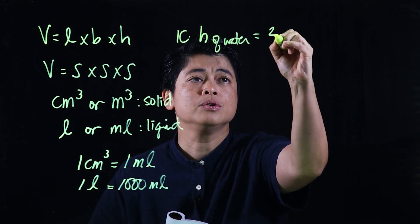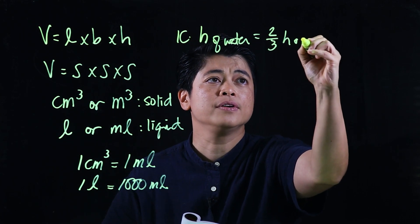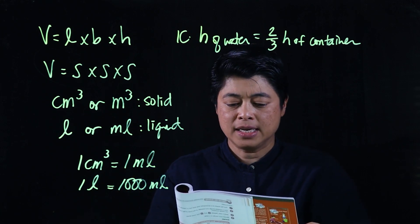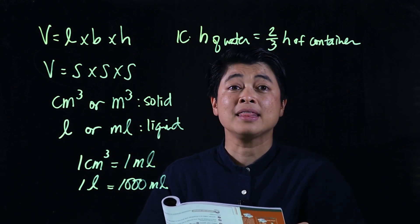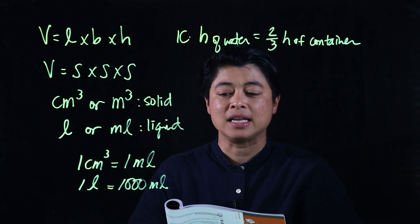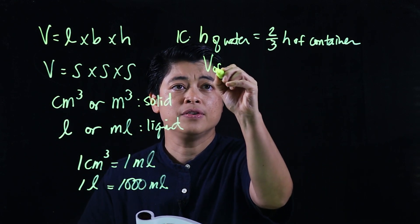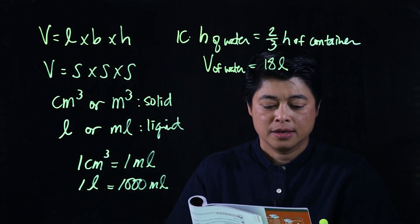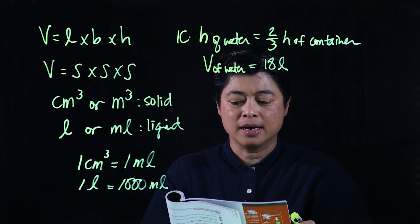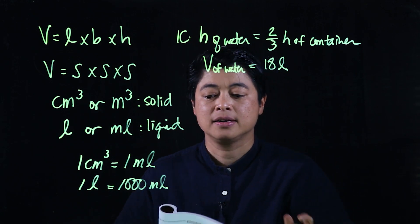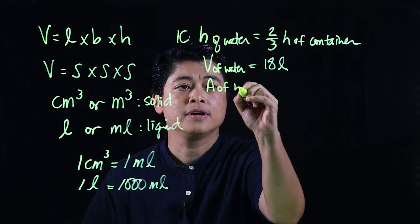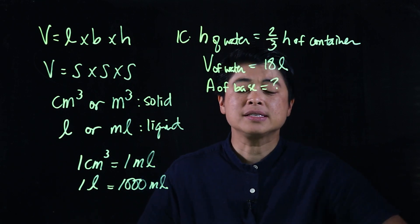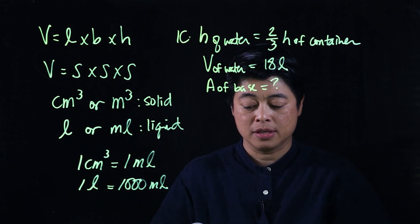The height of the water is equal to two-thirds the height of the container, and the volume of water is 18 liters. The question asks us to find the base area of the tank.